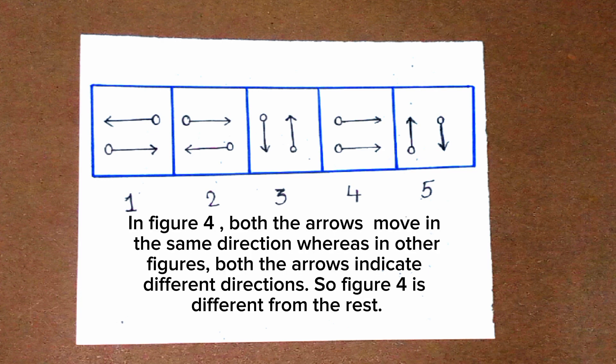In figure four, both the arrows move in the same direction, whereas in other figures both the arrows indicate different directions. So figure four is different from the rest.